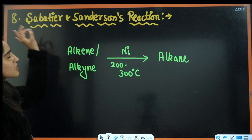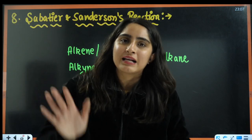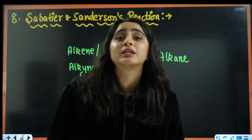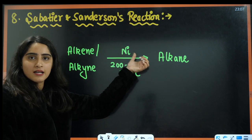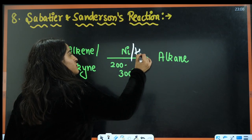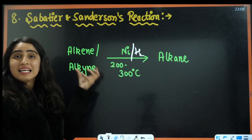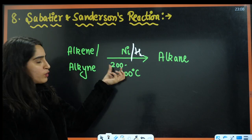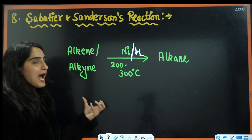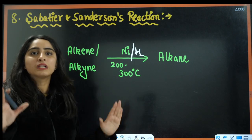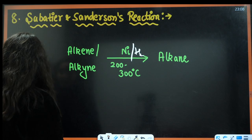Next is Sabatier-Senderens reaction. Here alkene or alkyne is converted into alkane with the help of nickel catalyst — hydrogenation takes place. For alkene conversion, we use around 200°C, and for alkyne conversion, around 300°C temperature.